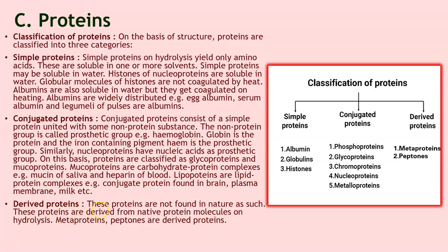Derived proteins are not found in nature as such. These proteins are derived from native protein molecules on hydrolysis. Examples include metaproteins and peptones — these are all derived proteins.